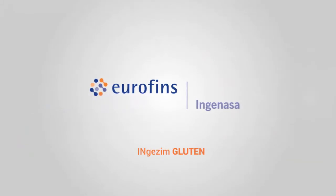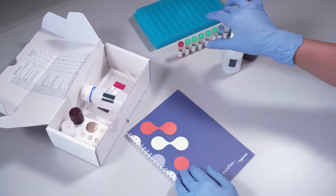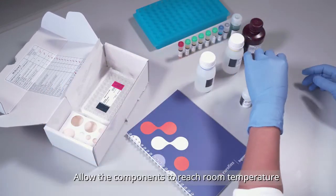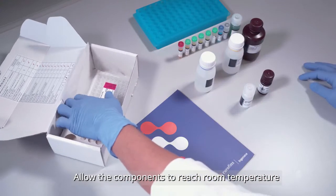IngeSim Gluten is an ELISA based on the R5 monoclonal antibody for the detection of gluten in foodstuffs and environmental samples. Allow the components to reach room temperature.